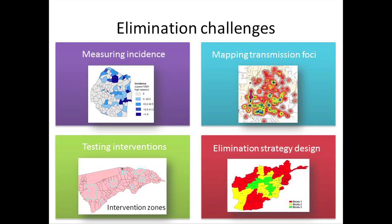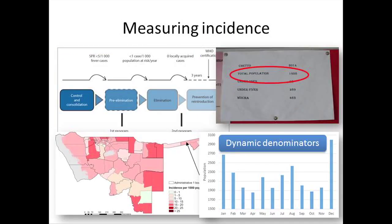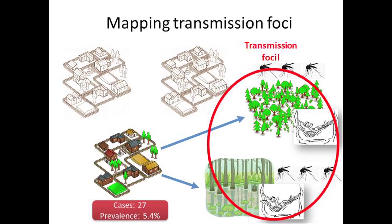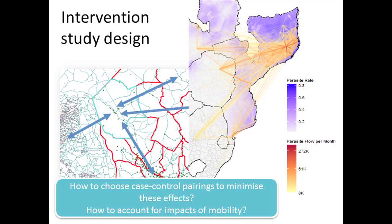So how does that change the way we think about these challenges? For measuring incidence, we rely on a static denominator assuming it stays the same throughout the year, when in actual fact those denominators can change hugely. For transmission foci, a village may be seeing higher prevalence because many of the residents work in forests or marshy areas where they're acquiring infections, and the actual transmission focus may be somewhere else.